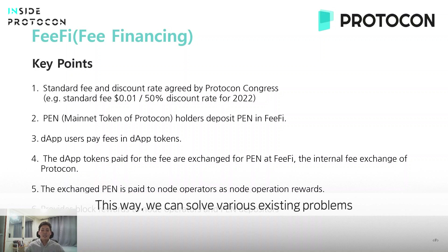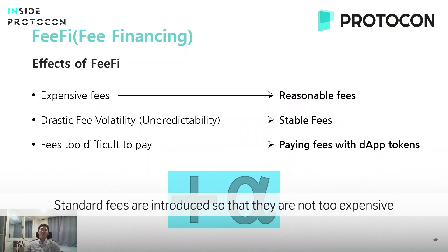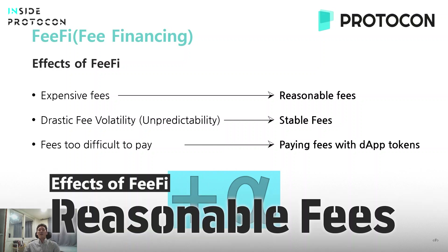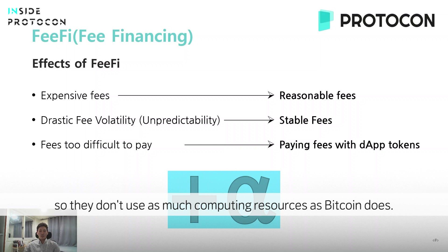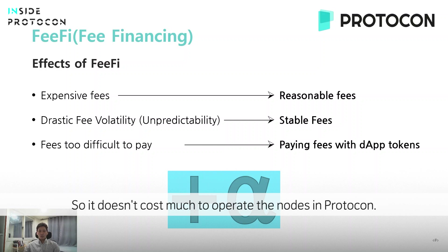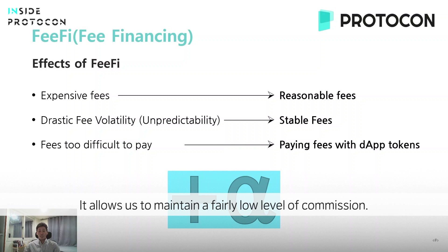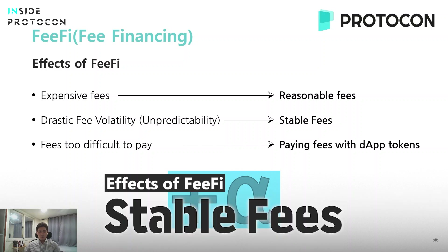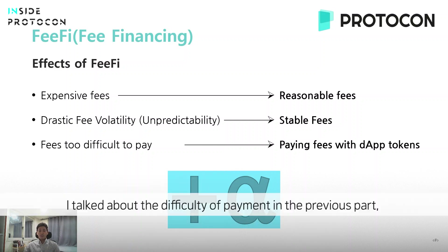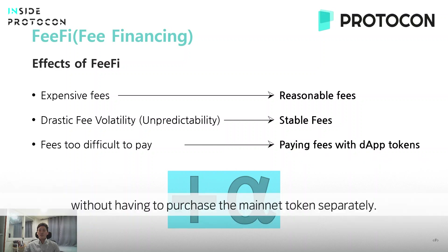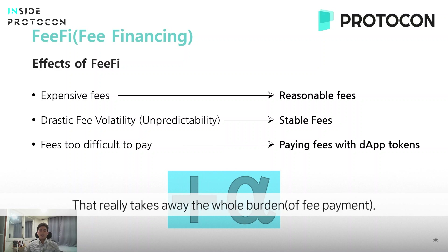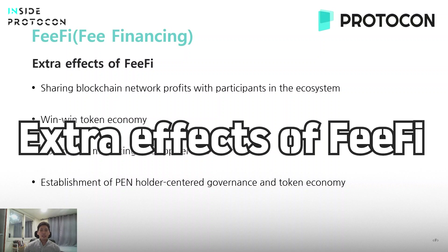This way we can solve the various existing problems of current blockchain fees. Standard fees are introduced so that they are not too expensive and can be set at a reasonable price. Protocon uses PVFT algorithms, so they don't use as many computing resources as Bitcoin does, allowing fairly low commissions. The standard fee system allows a stable fee criteria to be established. Through fee-fi, you can pay fees with your own dApp tokens without having to purchase the payment token separately, which really takes away the whole burden.